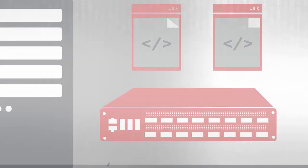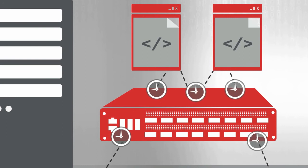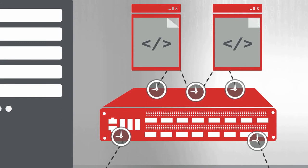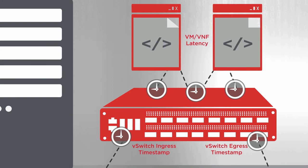Now let's see what's happening on the server side. A SmartNIC offloads and accelerates the virtual switch data plane, with timestamps taken at virtual switch ingress and egress ports. The SmartNIC can calculate latencies and insert them as metadata, including V-switch ingress latency, V-switch egress latency, and VM/VNF latency. It can now isolate problems between the NIC, virtual switch, and VMs and VNFs.